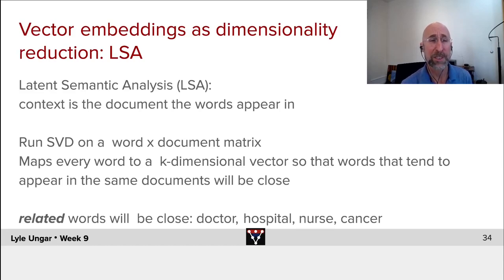The classic method for doing vector embeddings is latent semantic analysis, LSA. This takes each word and looks at the documents it shows up in—web pages or text messages. We take a big matrix of word by document and run singular value decomposition on this, or run PCA. We get a reduced dimension principal component that maps each of my million words to say a 300-dimensional k-dimensional vector such that words that tend to show up in the same documents will be close in that embedding.